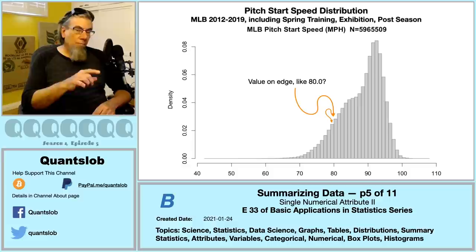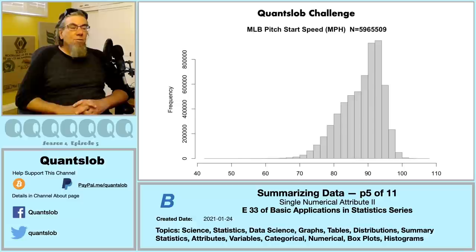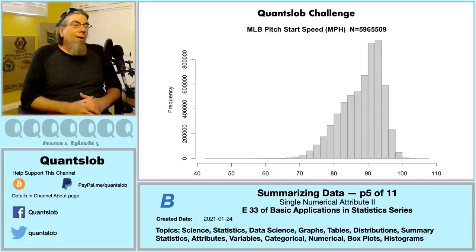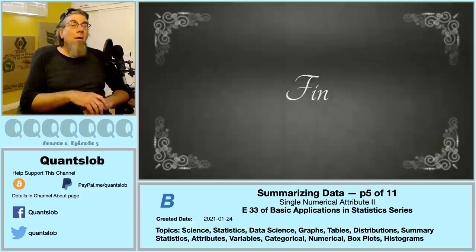Now, before we close out — time for our QuantSlob challenge: how might we describe the shape of this distribution — the shape of the shaded area in the histogram? Seems simple enough — or is it? We're going to take a look at this along with lots more exciting stuff in part six. You are definitely not going to want to miss that. Thank you very much for tuning in.